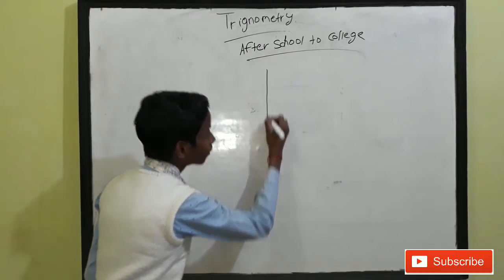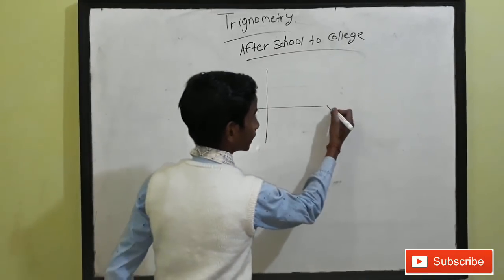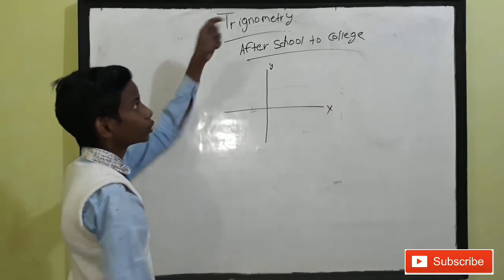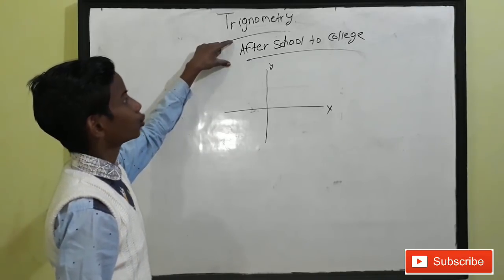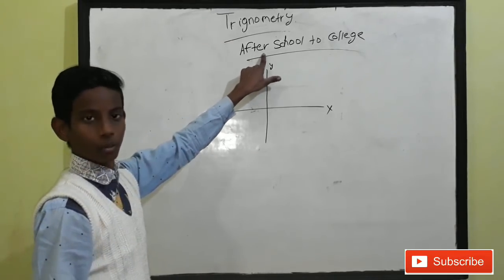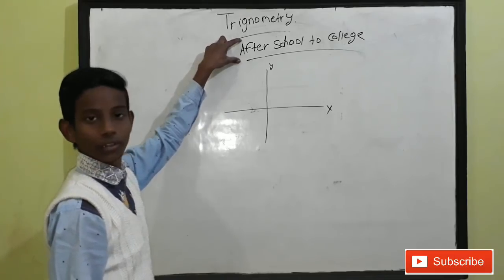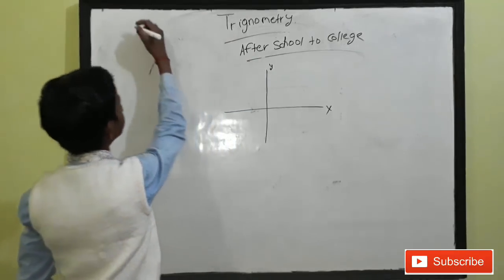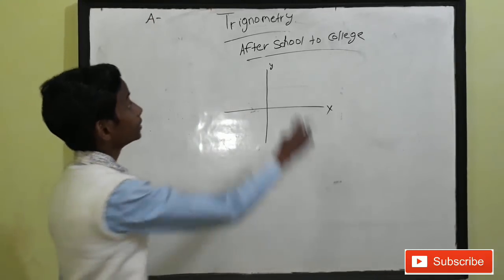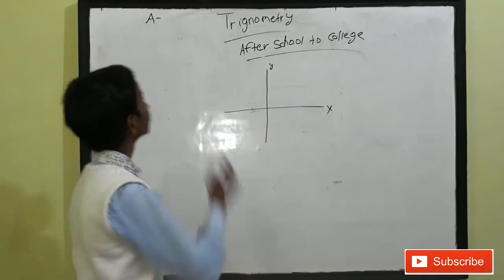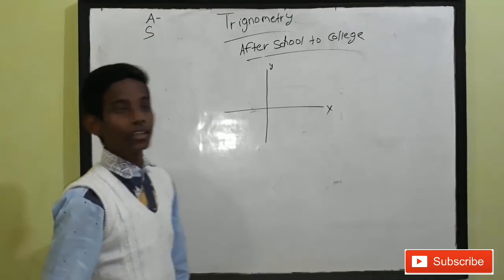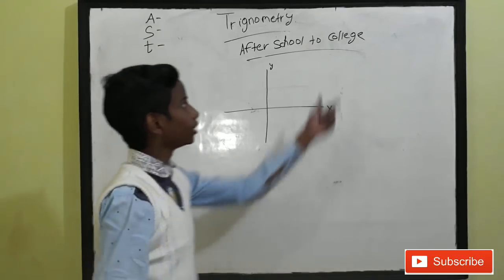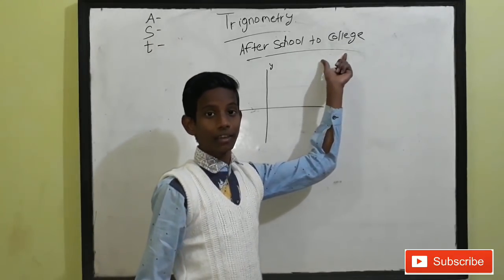First, we have to make four quadrants. As we know, this is the x-axis and this is the y-axis. Now focus on the formula. We have to choose only the first alphabet of each word. The first alphabet is A, in the second word the first alphabet is S, and in the third word the first alphabet is C.